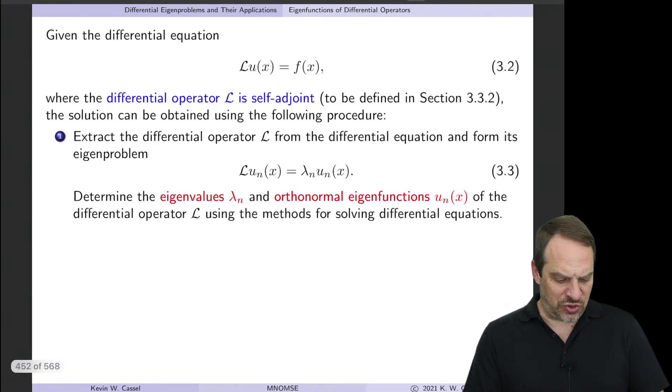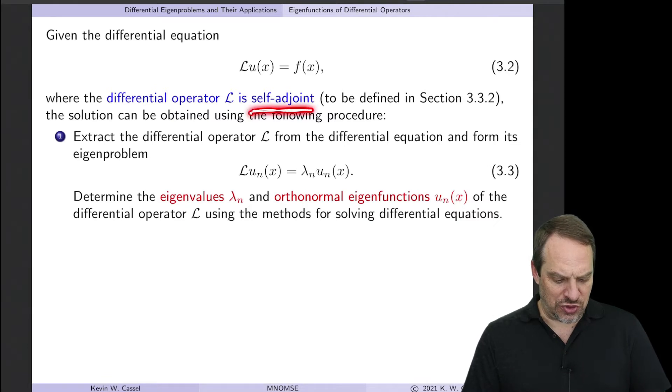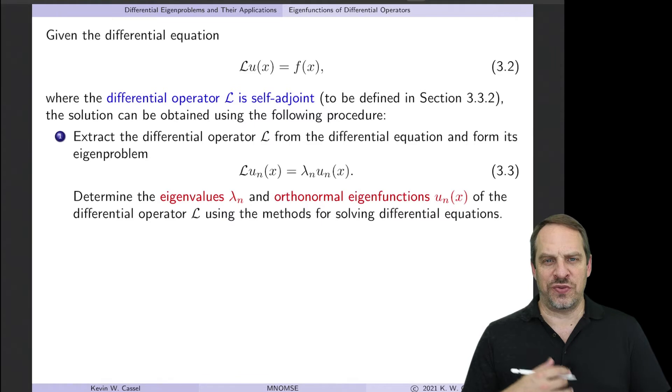So we start with our differential equation L U is equal to F. So L is the differential operator. It's linear. It's also self-adjoint. This is a new term that I'm introducing. We'll talk more about this in a later video and define what it means and how we check for it. But the differential operator has to be self-adjoint. It's essentially analogous to our A matrix being symmetric, as we'll see.